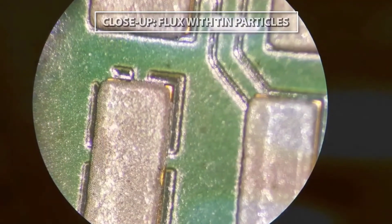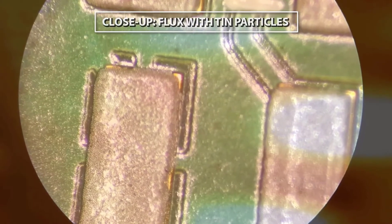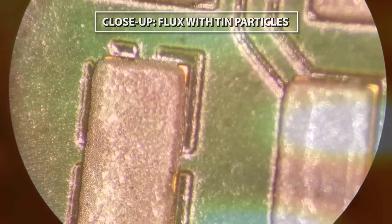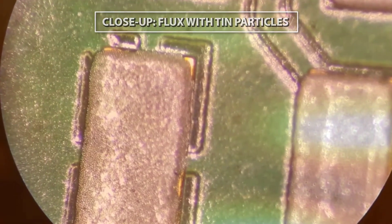During the thermal soak, the flux is activated to reduce oxidization of pads and leads of components and improve solder wetting. In the third section, the solder paste melts or reflows and the process reaches its maximum temperature.